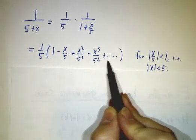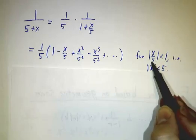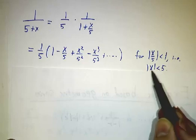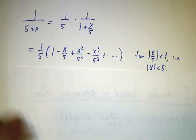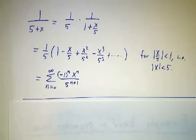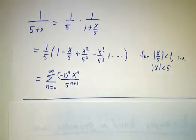and it works whenever the stuff is less than 1. In this case, the stuff is x over 5, so this works whenever x in magnitude is less than 5. So there is an explicit power series, there's the formula for each term, for the function 1 over 5 plus x.